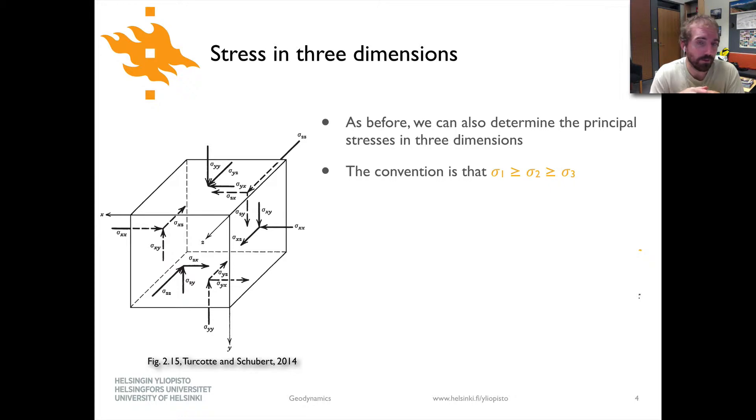As we had done previously in two dimensions we can also determine the principal stresses in three dimensions here. We'll bypass doing the actual math of calculating those but I will make a note that the convention used for principal stresses is what's shown here: sigma 1 is greater than or equal to sigma 2 which is greater than or equal to sigma 3. So all three can be equal to one another. If one of them is larger that's going to be denoted as sigma 1 and the smallest then would be denoted as sigma 3.